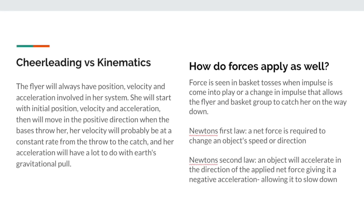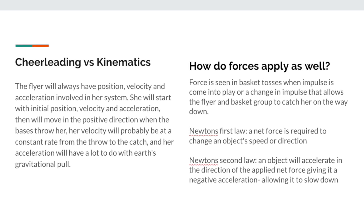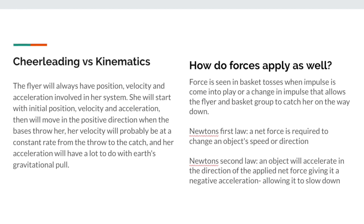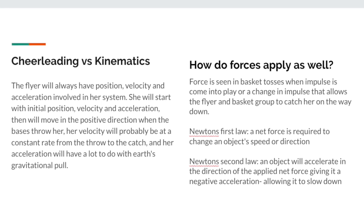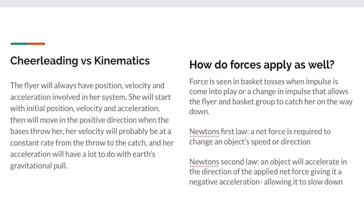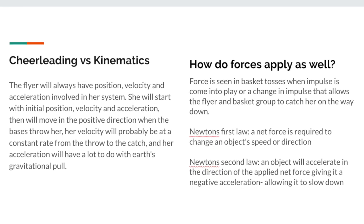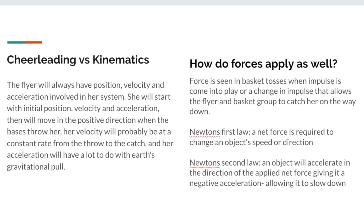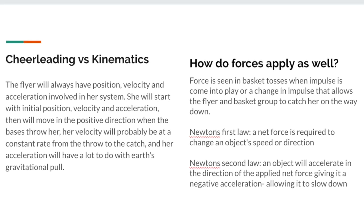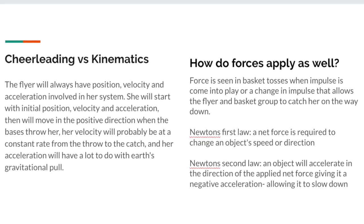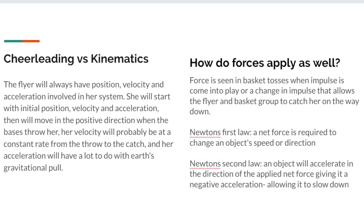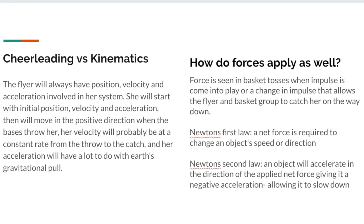Force is seen in basket tosses when momentum or impulse is coming into play as well. So we can look at Newton's first and second law. The first law is that there's a net force required to change the object's, or the flyer's, speed or direction. And then the second law would be an object that is accelerating in a certain direction with the applied force giving a negative acceleration on it — so that would be gravity trying to slow the flyer down.